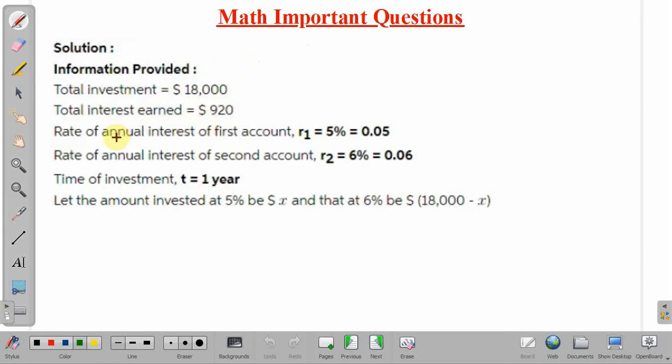Annual rate of interest of first account, r1 is 5% or 0.05, and annual rate of interest of second account r2 is 6% which equals 0.06, and time of investment t is 1 year.